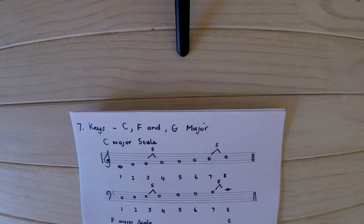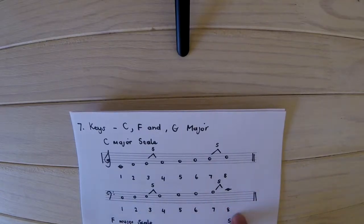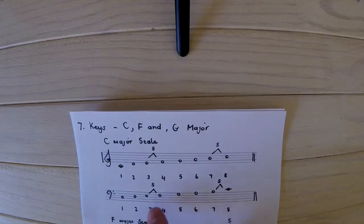Right, let's quickly go on. Now, for the left hand, we start on C, the second space, and we're going to write it up until middle C. And we mark the degrees again, and then our semitones will be again at 3 and 4 and 7 and 8.